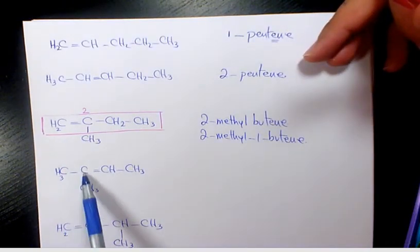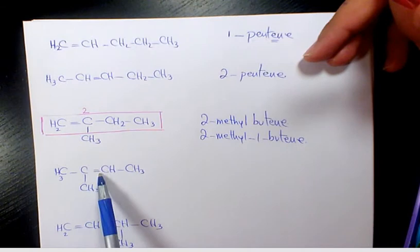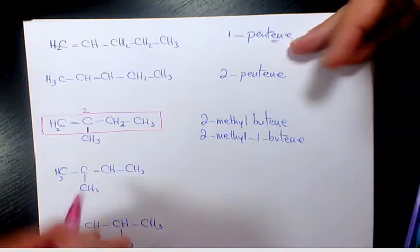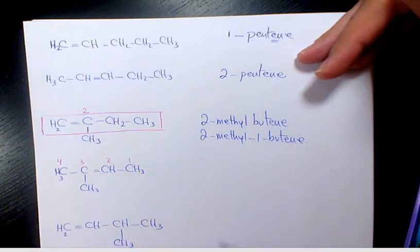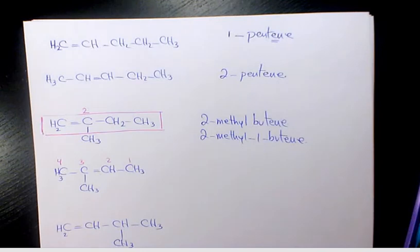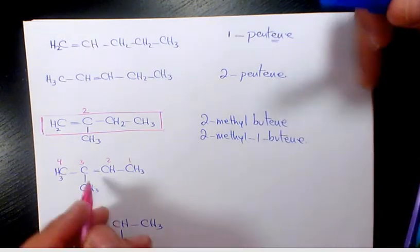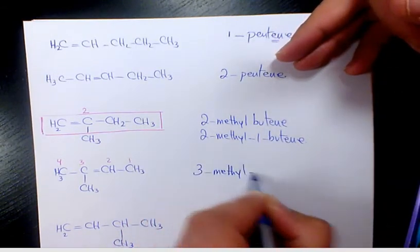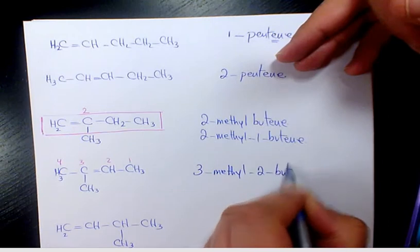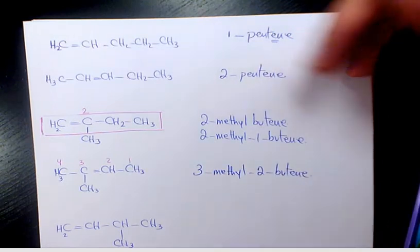The double bond is in here. That's one, two, three, four. So we have four carbons and double bond on the second carbon. It's going to be 3-methyl-2-butene. That's the name of this organic compound.